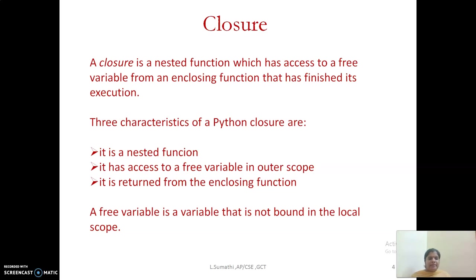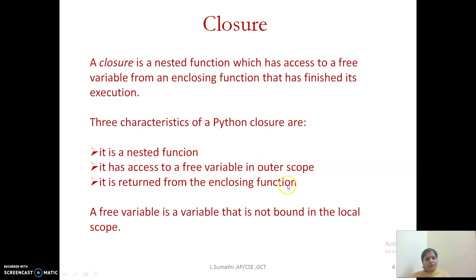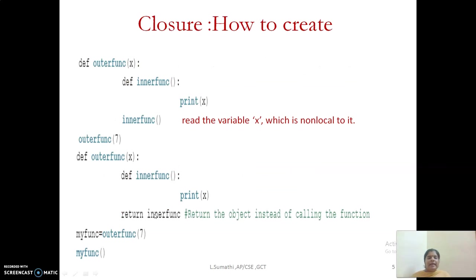As a continuation of nested functions, now we will see what is a closure. A closure is a nested function which has access to a free variable from an enclosing function that has finished its execution. That means even if an execution is completed, you can still access the values generated by it. The characteristics of a Python closure: it has to be a nested function, it can access a free variable in outer scope, and it is returned from the enclosing function. A free variable is a non-local variable.